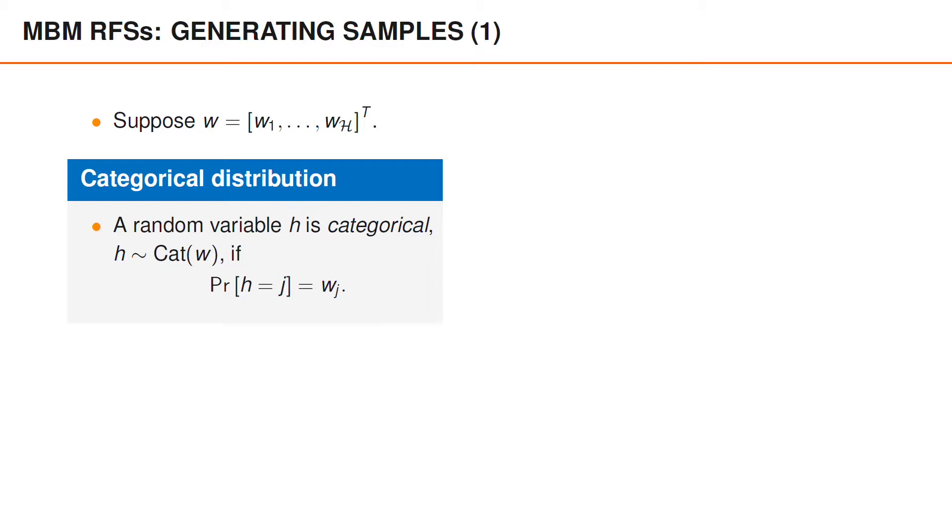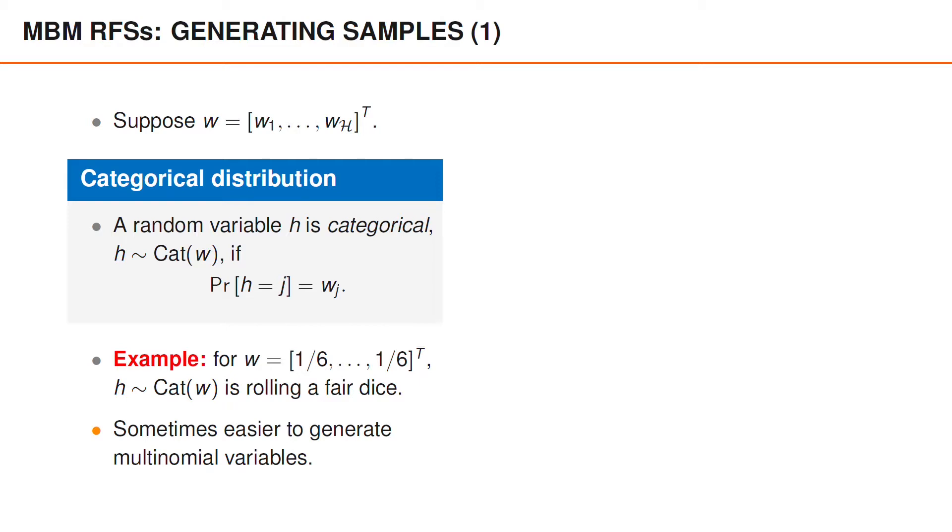As you can see, the categorical distribution is simple, and it is also a distribution that appears in many contexts. For instance, the outcome when you roll a fair dice is categorical with a parameter vector W of length 6, whose elements are all 1 sixth. A minor remark is that, depending on your software, it may be easier to instead generate multinomial variables, but the algorithm presented here assumes that you generate categorical random variables.